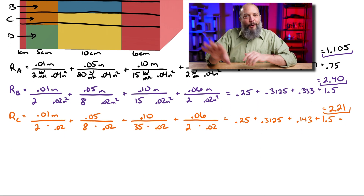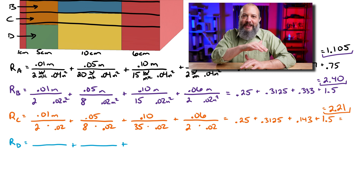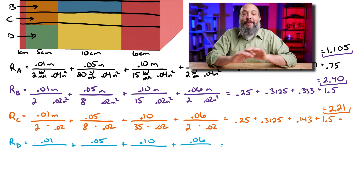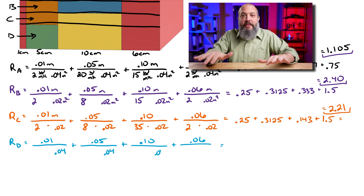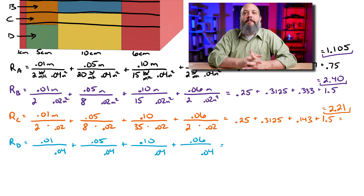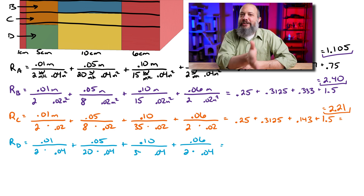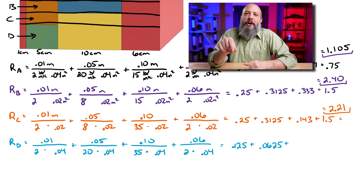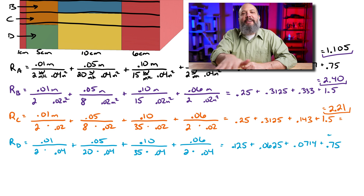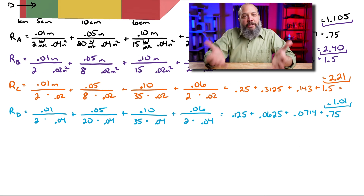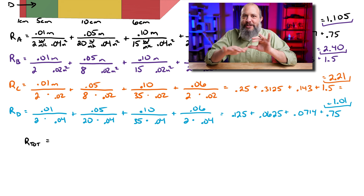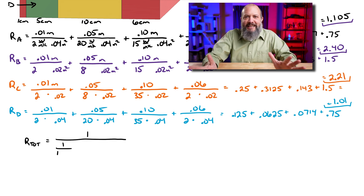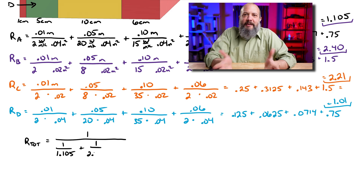Path D has the same four section lengths of 1, 5, 10, and 6 cm, but this section is the full height of the green section, so all areas are 0.04 m². Plugging in K values of 2, 20, 35, and 2 gives R_D = 1.01 K/W. So there are a lot more resistors in this method — 16 instead of 7 — but not a lot of extra brainpower. It's just tedious, busy work.